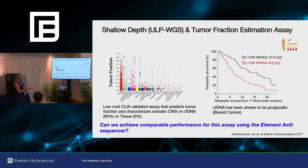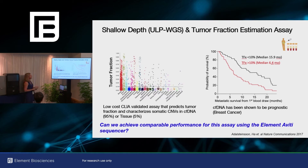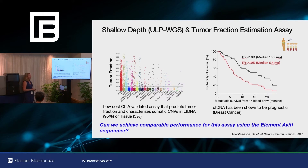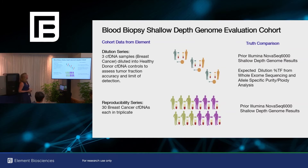This assay has also been shown to be prognostic in breast cancer. It was published that if patients have more than 10% tumor when measured with this low-pass sequencing assay, they have lower median survival. So we wanted to know: with the Element sequencer, can we achieve comparable performance to our current clinical assay?